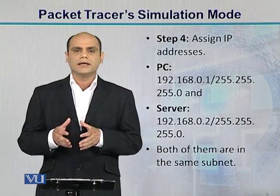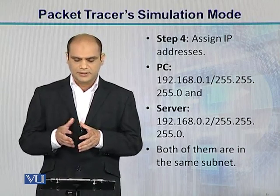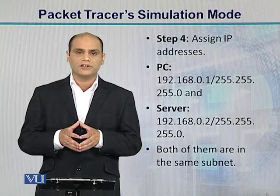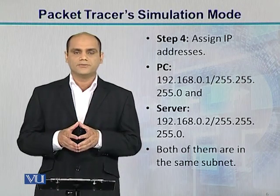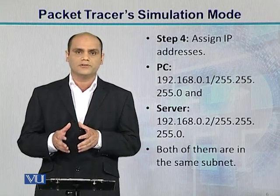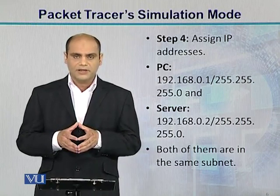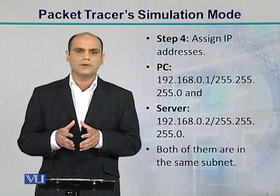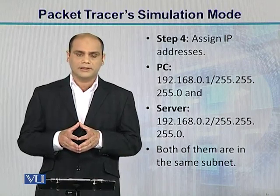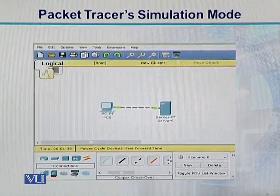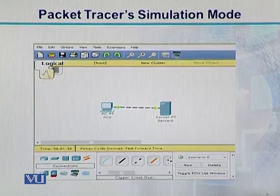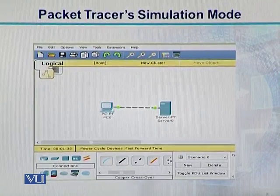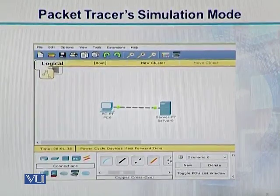Step number four mein hum inko IP addresses assign karte hain. PC ko hum assign karte hain 192.168.0.1 slash 255.255.255.0 — yeh iska mask hai. Aur jo server hai, uska hum assign karte hain 192.168.0.2, same subnet mein. Is diagram mein aap dekh sakte hain PC aur server connected hain copper cable ke through, aur jo link hai wo green hai — iska matlab hai link status is on.